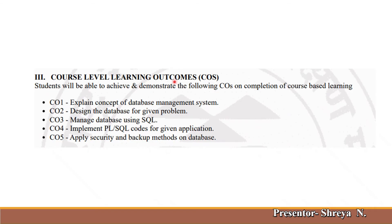Now, this is the course level learning outcomes, which we call COs. Your teacher will be using this word — COs. These are also asked in viva. CO1 is: explain the concept of database management system. All the basic concepts related to this subject, you should be able to explain them.